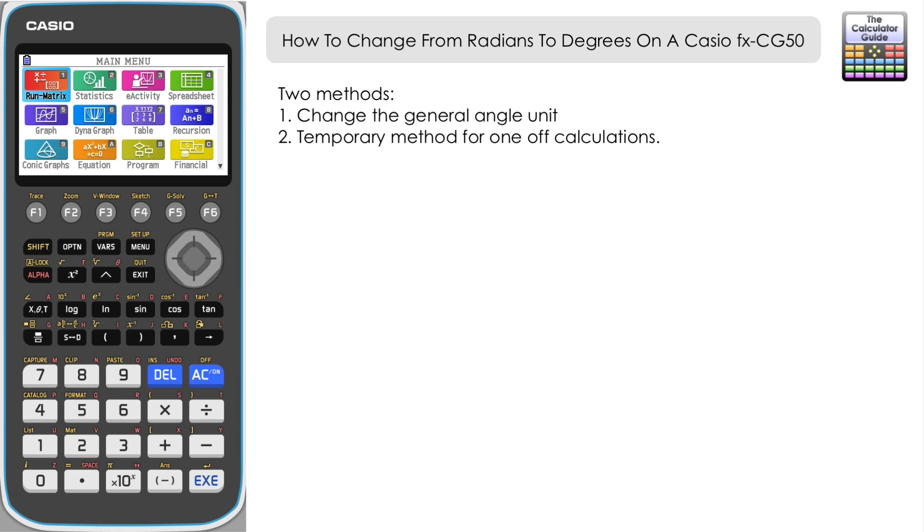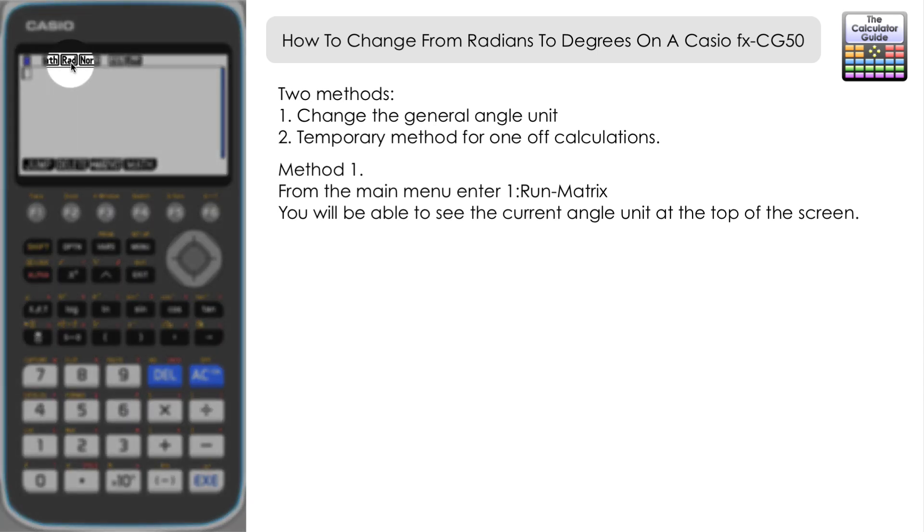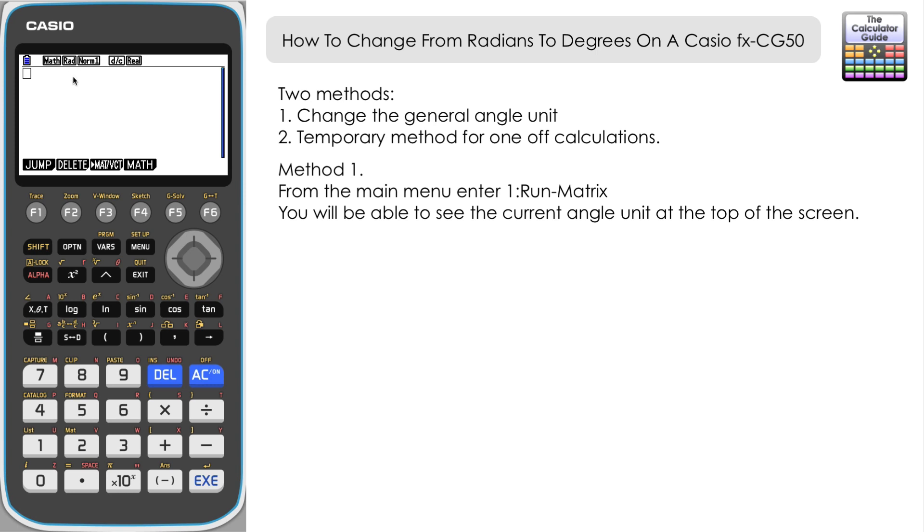From the main menu, let's enter Run-Matrix. You can see at the top here it displays the angle unit—we've got it currently in radians, which will be important for any of the trigonometric functions that we're using: sine, cosine, tangent, and so on. The calculator will read the angle that you input into those as being in radians. Let's say that we want to change that to degrees.